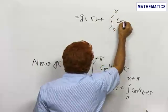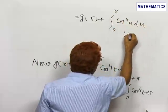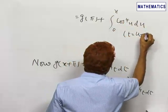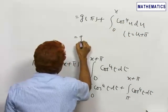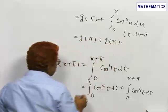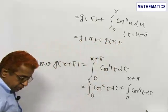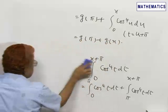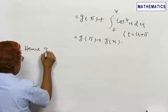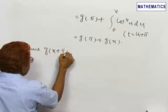When we substitute t equals u plus π, this becomes the integral from 0 to x of cos to the power 4 of u du, and this is precisely g(π) + g(x). That proves the first part.